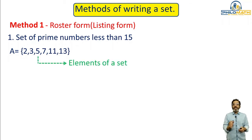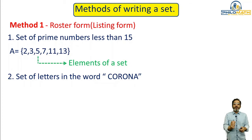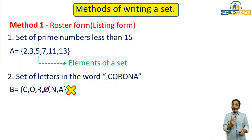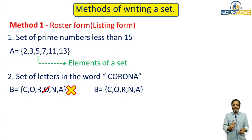Whatever you write inside curly brackets are called elements of a set. Let us take one more example: the set of letters in the word 'corona.' If I write B = {c, o, r, o, n, a}, that answer is wrong because the letter 'o' is repeated twice. Always remember: elements of a set should not be repeated. So the correct answer is B = {c, o, r, n, a}.